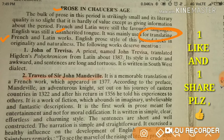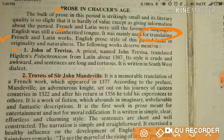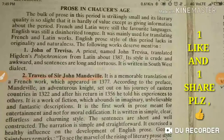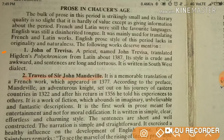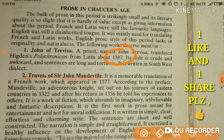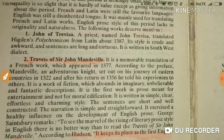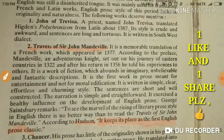John of Trevisa was a priest who translated Higden's Polychronicon from Latin around 1387. His style is crude and awkward, and the sentences are long and tortuous. These are less important details, but worth knowing.